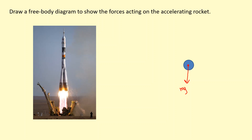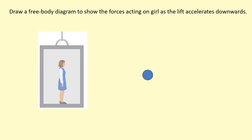Here we have a rocket that's accelerating upwards. We still have weight acting downwards, and there's going to be a large thrust going upwards — larger than the weight, which is why it's accelerating upwards, because the resultant force is upwards. If there is any air resistance, it would act in the opposite direction to motion, so it would also be acting downwards because the rocket is going upwards.